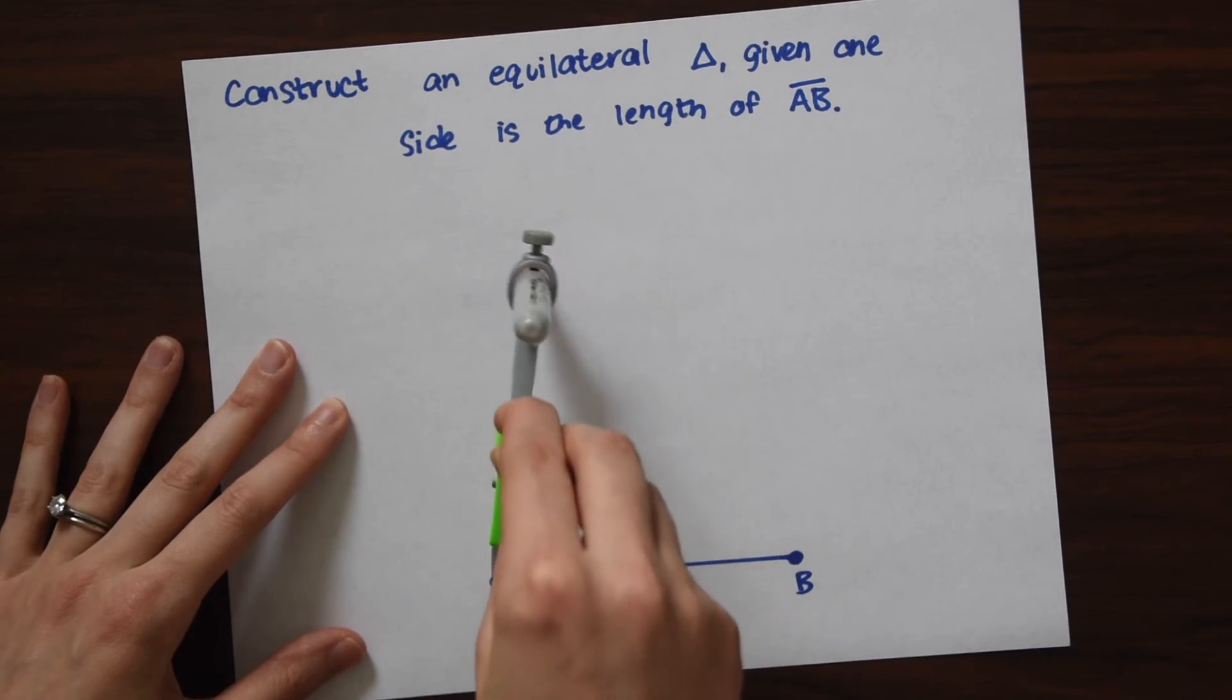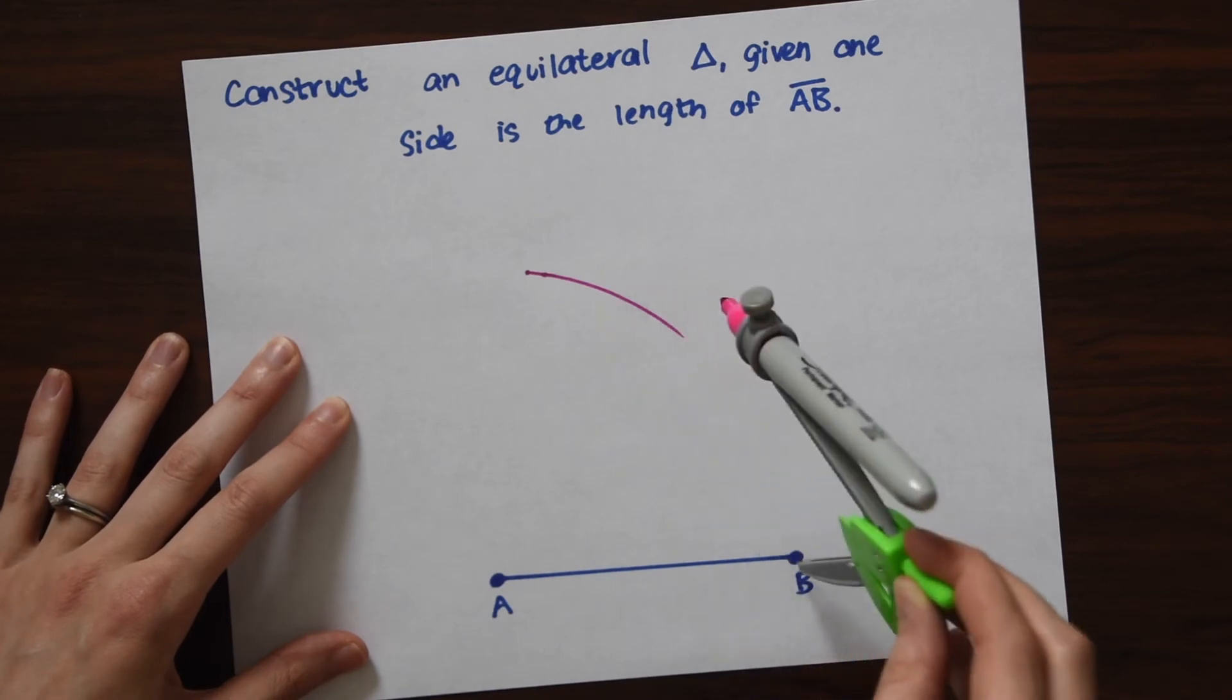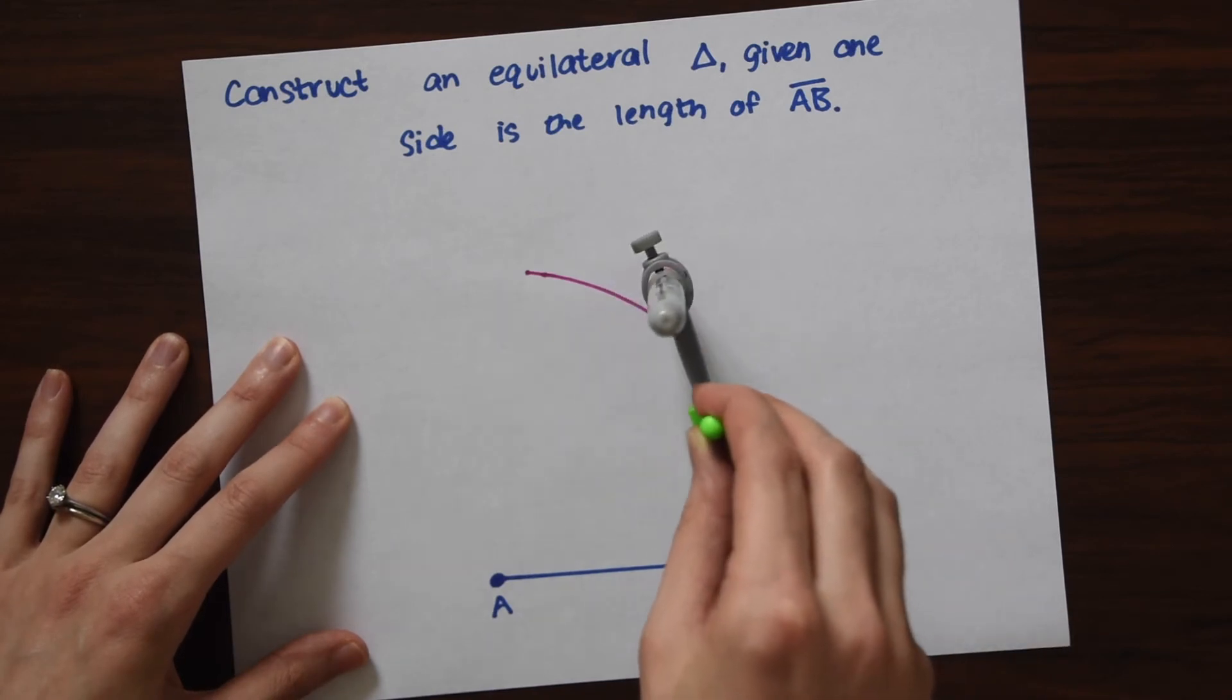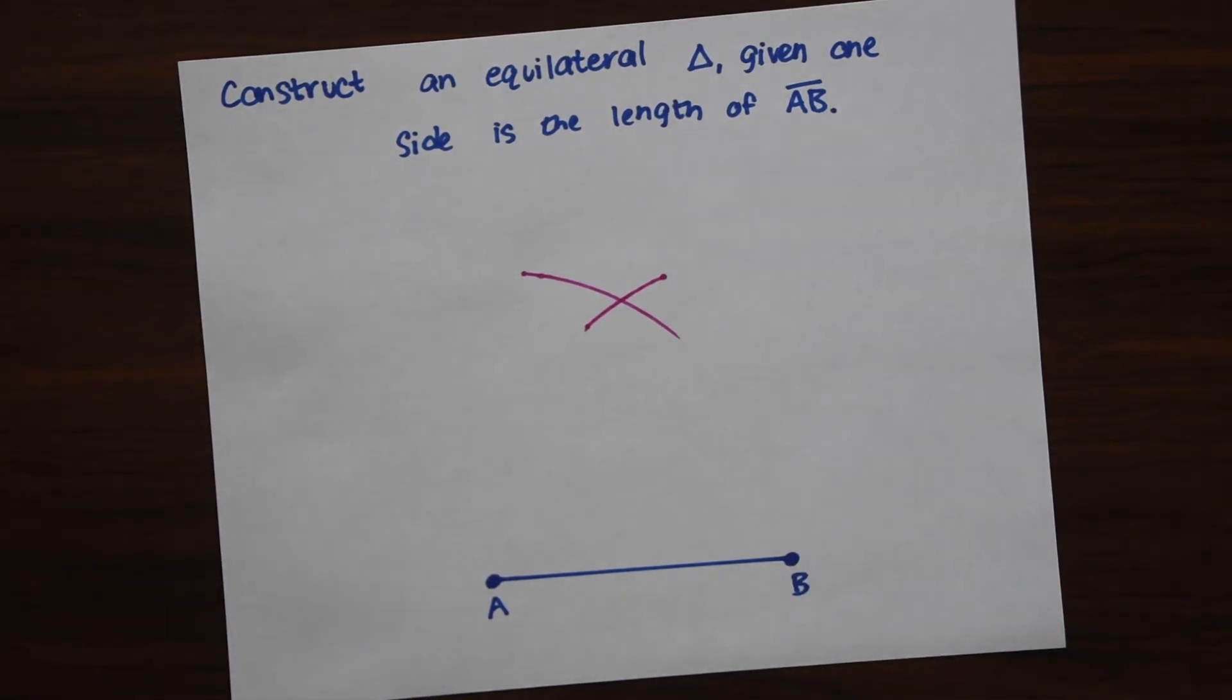And then we're just going to take the base of the compass to one point. Let's go to point A first. We're going to swing our compass a little bit making this little arc. Now we're going to go to point B and do the same thing and notice they intersect at a certain point.